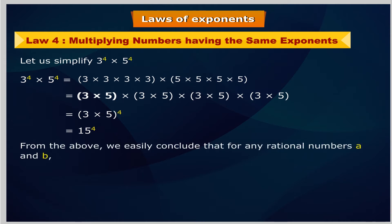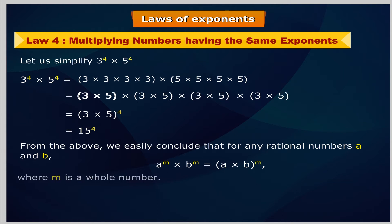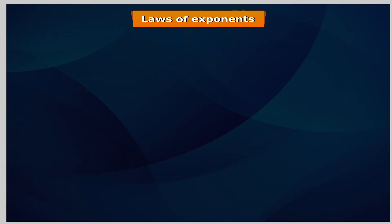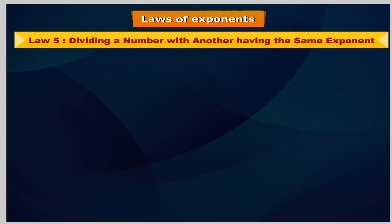From the above, we easily conclude that for any rational numbers A and B, A to the power M multiplied by B to the power M equals A multiplied by B, within brackets, to the power M, where M is a whole number.